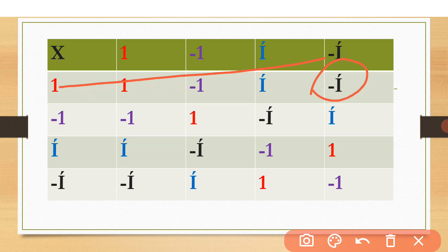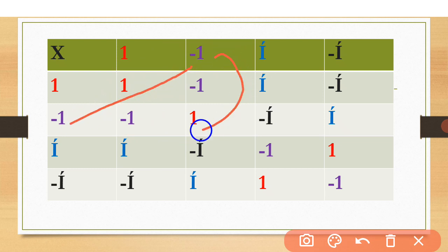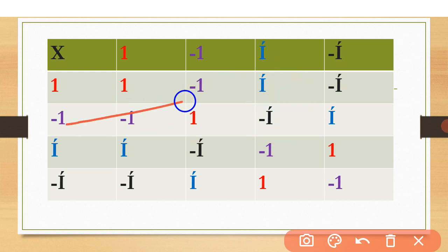Here 1 is the identity. When any element is multiplied by the identity, the answer will be that same element. Now we check the second row: when -1 is multiplied by 1, the answer is -1. When -1 is multiplied by -1, the answer is +1. When -1 is multiplied by i, the answer is -i. When -1 is multiplied by -i, the two negatives cancel and the answer is i.